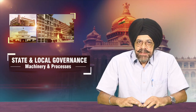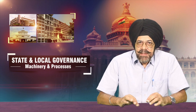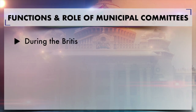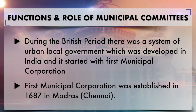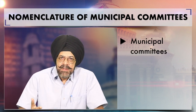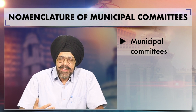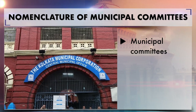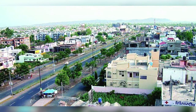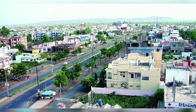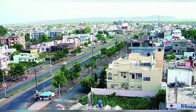As far as their history goes, during the British period there was a system of urban local government which was developed in India. It started with the first municipal corporation, which was established in 1687 in Madras. Thereafter, three municipal corporations were established in Bombay, Madras and Calcutta, and then slowly in cities there was a demand for municipal committees. The Britishers also wanted to hand over the dealing of certain local affairs to local people.